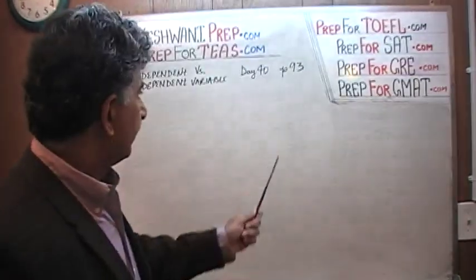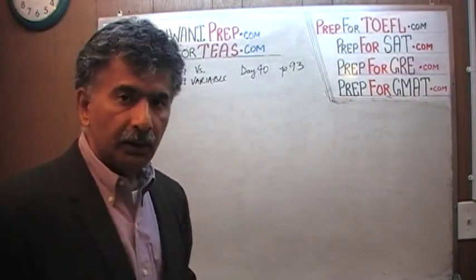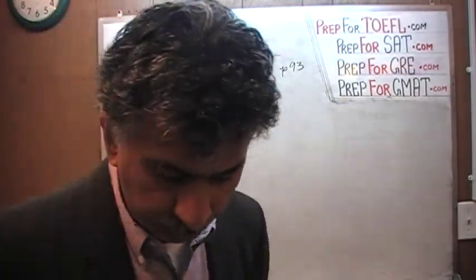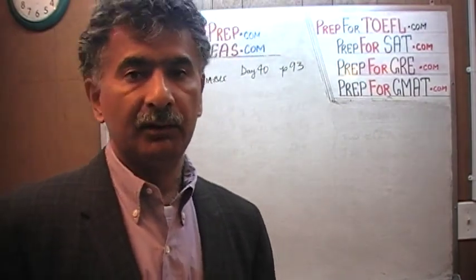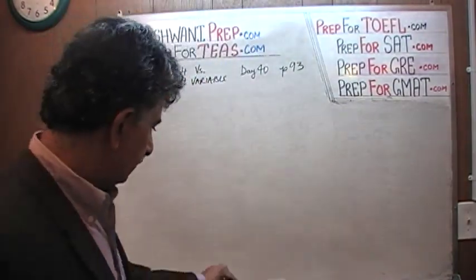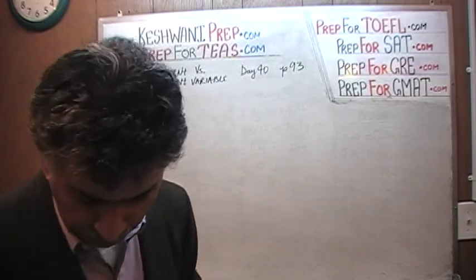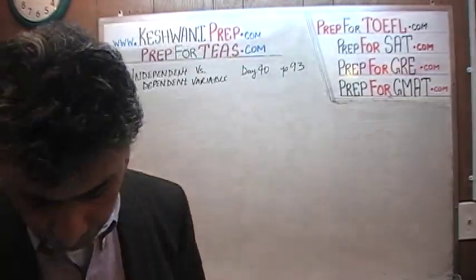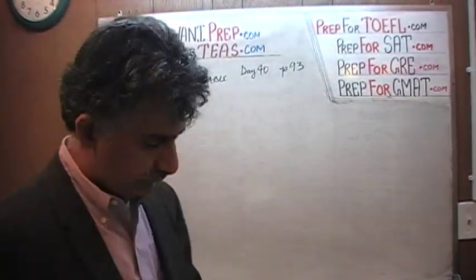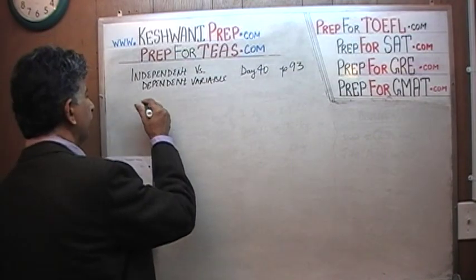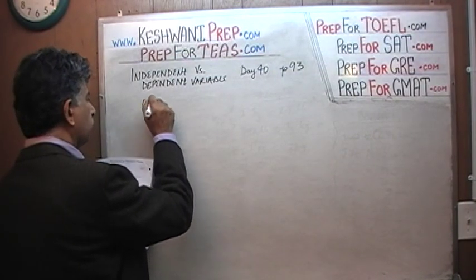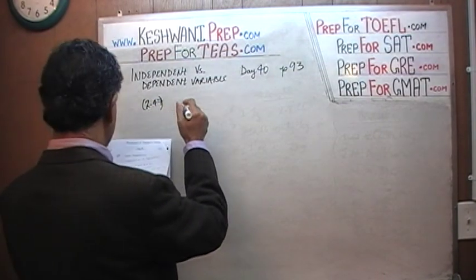Please turn to page number 93. Today is our lesson number 40. Today we will discuss the notion of independent variable versus dependent variable. Let's take a look at the first example here: 2.47.